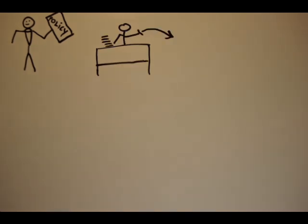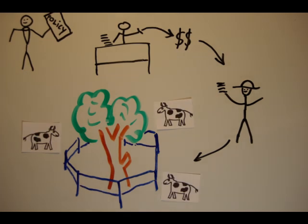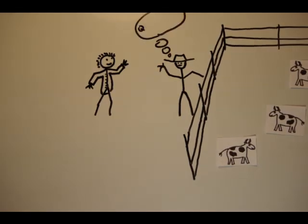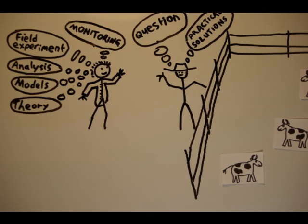With the knowledge we have about the Matrix, it's now up to policy makers, funding agencies and land managers to make the Matrix a friendlier place for native species. On top of that, we need researchers to work with land managers to find new ways to modify the Matrix so that it helps to sustain our natural heritage.